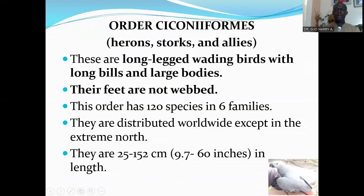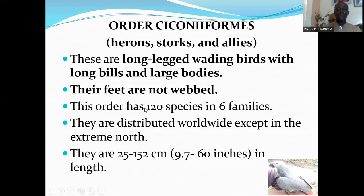The next order is Order Ciconiiformes, which has herons, storks, and allies. These are long-legged wading birds with long bills and large bodies. Their feet are not webbed. This order has 120 species in six families and are distributed worldwide except in the extreme north. They are 25 to 152 centimeters in length. Here are birds of Order Ciconiiformes — here is a heron, and we also have the cattle egret.